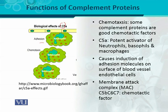The membrane attack complex, called MAC, made up of C5B, C6, and C7, is also considered a good chemotactic factor or chemoattractant.